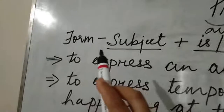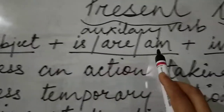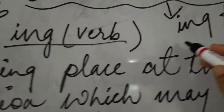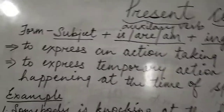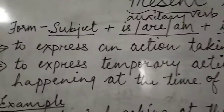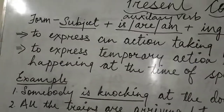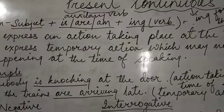So the continuous form is: first subject, then is/am/are as auxiliary verb, then the ing form of the verb, and then you can add an object. Now present continuous is used to express an action taking place at the time of speaking.